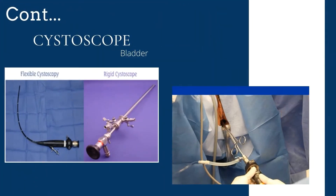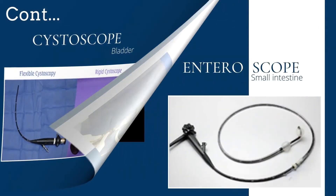The cystoscope — the procedure of the cystoscope is known as cystoscopy or cystourethroscopy. It is specially designed for the area of the bladder. It is inserted through the urethra.